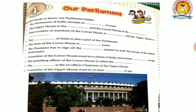Question 3: The total number of members of the lower house is 545 and the upper house is 250 — keep this in mind. Question 4: The President of India is also a part of the parliament. Question 5: The term of the lower house is five years.